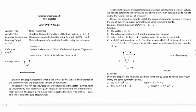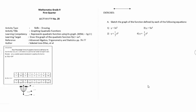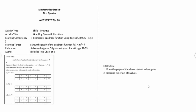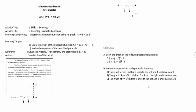Activity number twenty-three. Activity number twenty-four. Activity number twenty-five. Activity number twenty-six. Activity number twenty-seven.